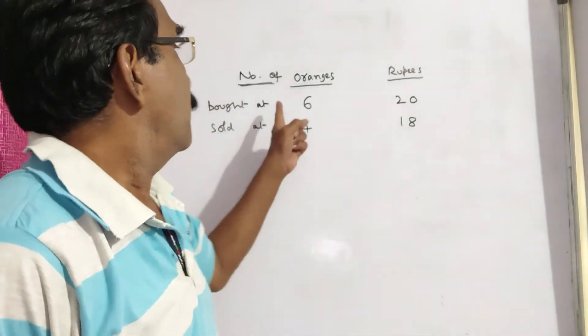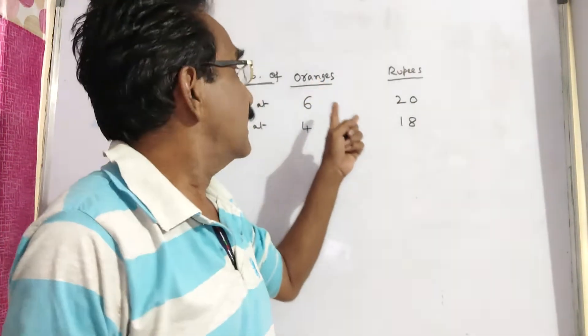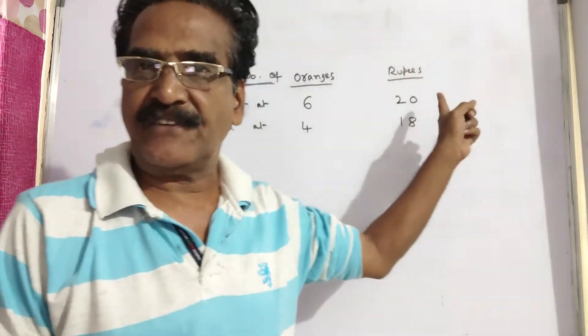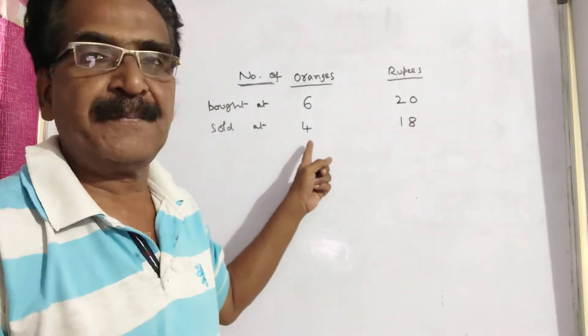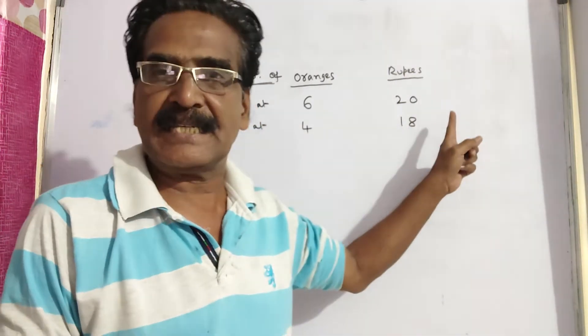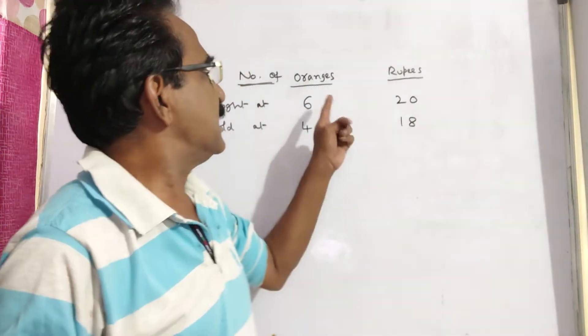See friends, a vendor buys oranges at 6 for Rs 20 and sells them at 4 for Rs 18. What is his gain percent?